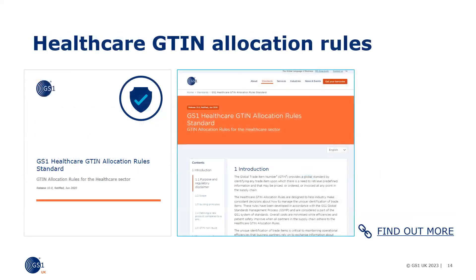The GS1 standards include guidance on the healthcare GTIN allocation rules and these should be consulted whenever something about the product, label or packaging changes.